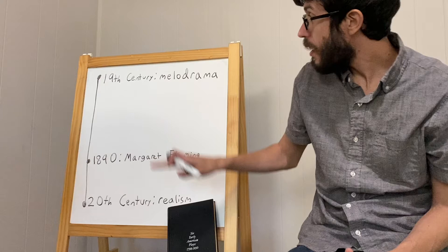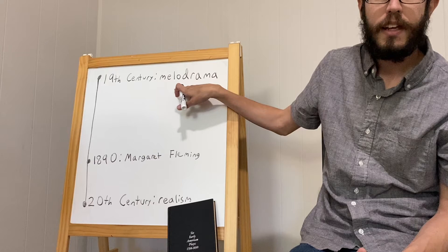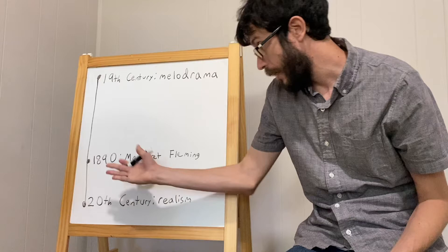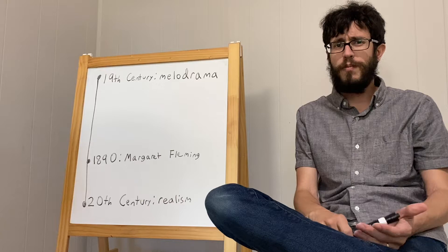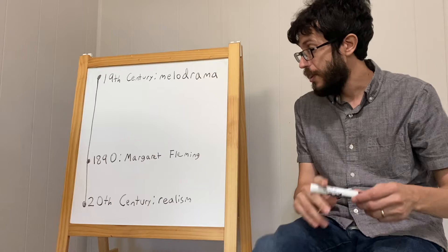I'm talking here about melodrama, which was the prevailing mode of theater in America in the 19th century, and realism, which started arguably with Margaret Fleming in 1890 and became the prevailing mode of American theater in the 20th century. Realism still exerts a huge influence over how we evaluate any kind of play, but in particular American plays.